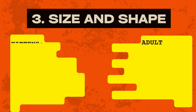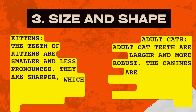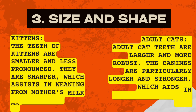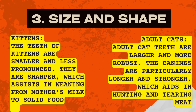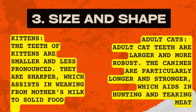Third, size and shape: the teeth of kittens are smaller and less pronounced, and they are sharper, which assists in weaning from mother's milk to solid food. Adult cat teeth are larger and more robust; the canines are particularly longer and stronger, which aids in hunting and tearing meat.